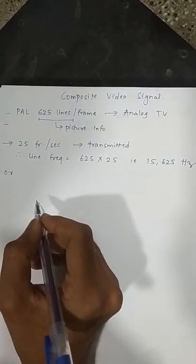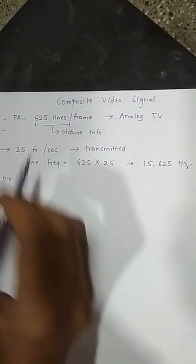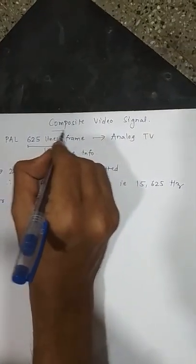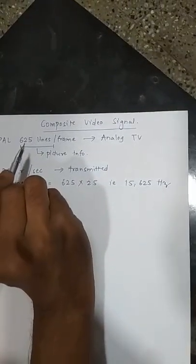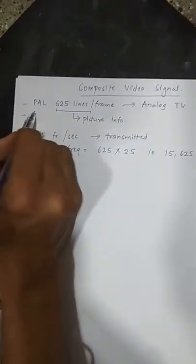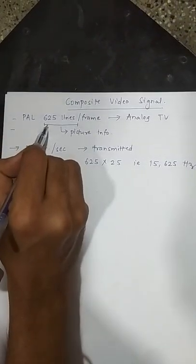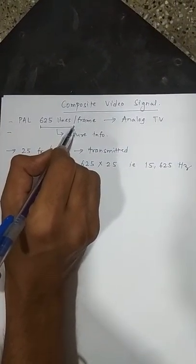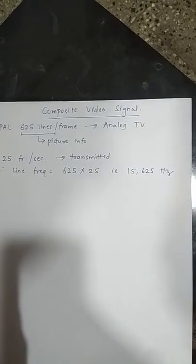Hello, so today we will study some important details about composite video signal. We know in India, PAL system which consists of 625 lines per frame is implemented for analog television.